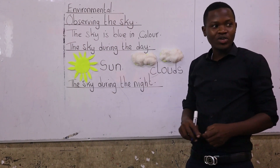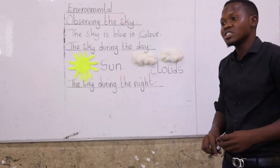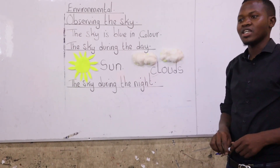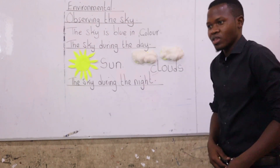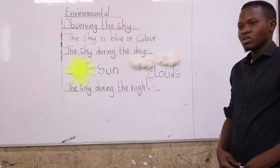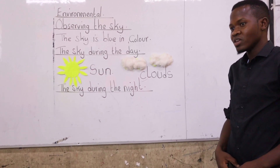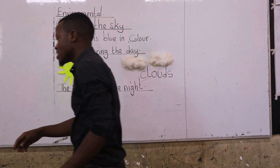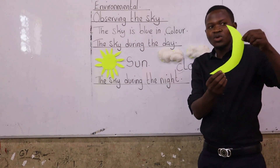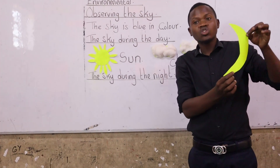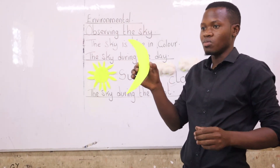Are we together? Yes. During the night, there are those things that can be seen only at night. Number one — when you go outside today before you go to sleep, just look at the sky and tell me what you will see. You will see something that looks like this. Who can tell me what this one is? Moon.